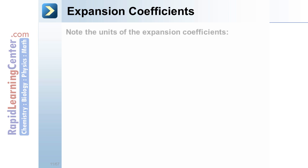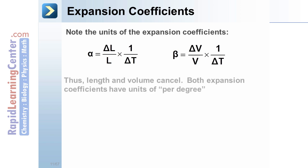Expansion coefficients. Notice the units of the expansion coefficients. Alpha would be equal to delta L over L times 1 over delta T. Beta, the volume expansion coefficient, would be delta V over V times 1 over delta T. These are found by simply rearranging the formulas to solve for alpha or beta. Thus, length and volume respectively cancel out. Both expansion coefficients have units of per degree, 1 over degrees.